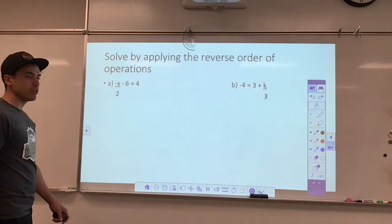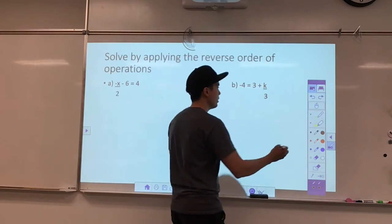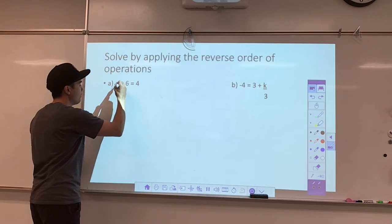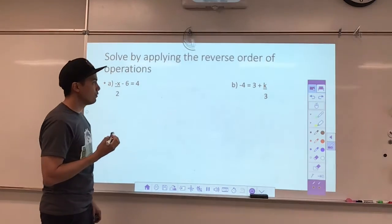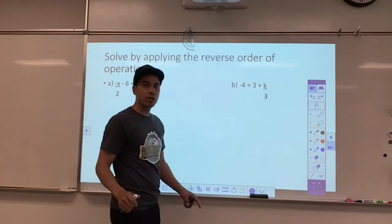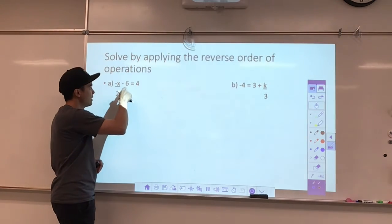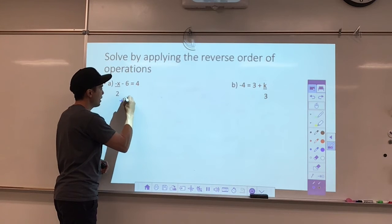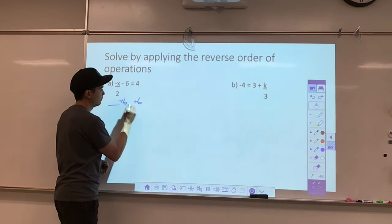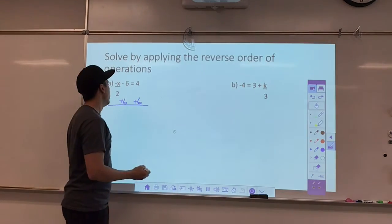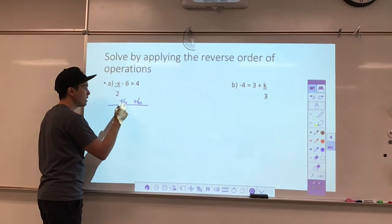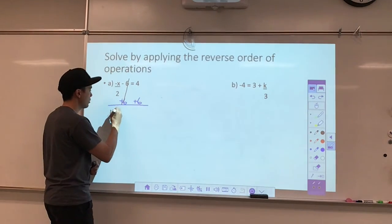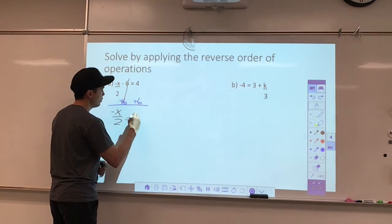Solving using opposite operations is also something we want to do. In this case I have negative x over 2 take away 6 is equal to 4. I want to get rid of the constant term on the same side as the variable first, so I'm going to add 6 to both sides. If I have a negative 6 and a plus 6, it cancels out to zero, and I have negative x over 2 equals 10.